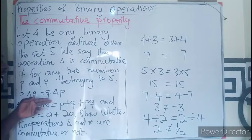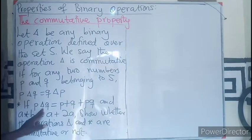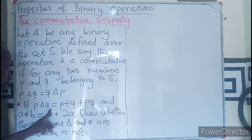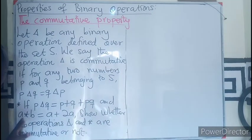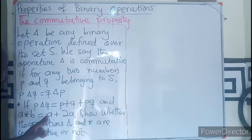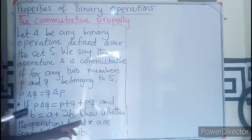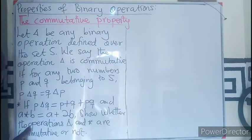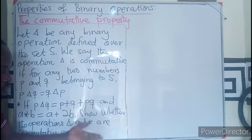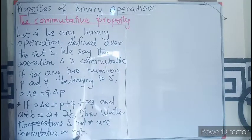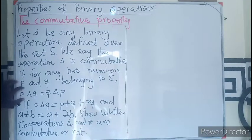Now let's see how we can explain that. If P △ Q = P + Q + PQ, and A * B = A + 2B, we have to show whether the operations Δ or * or even the two are commutative or not.